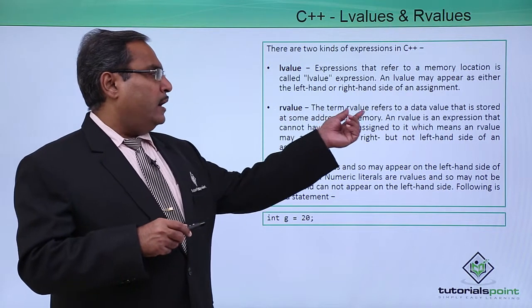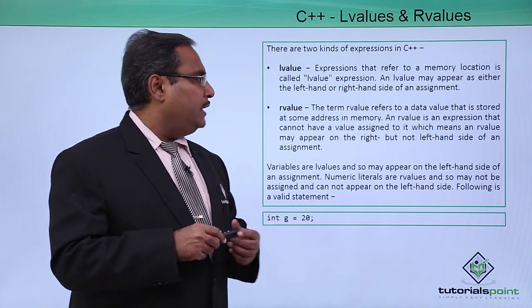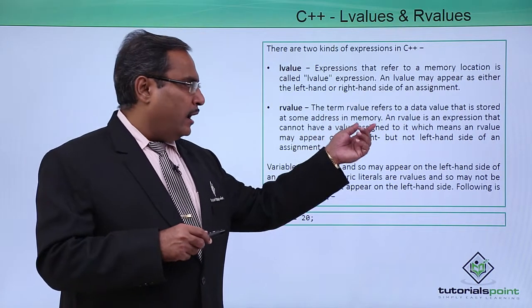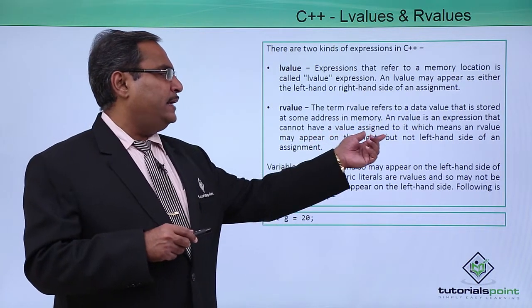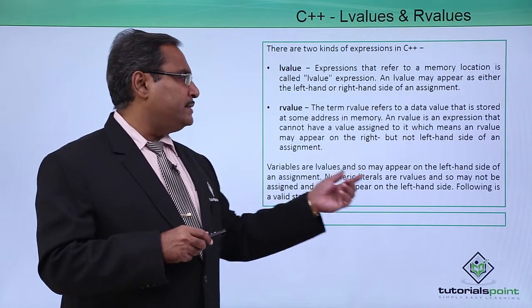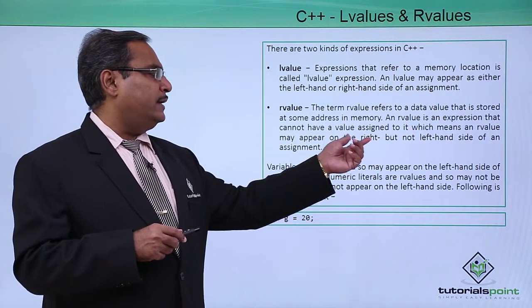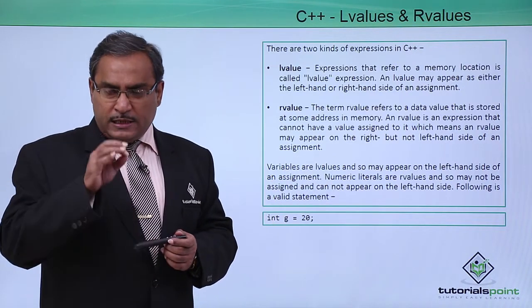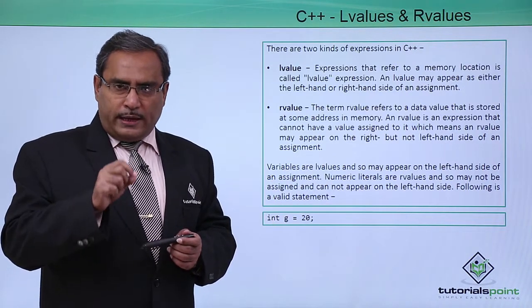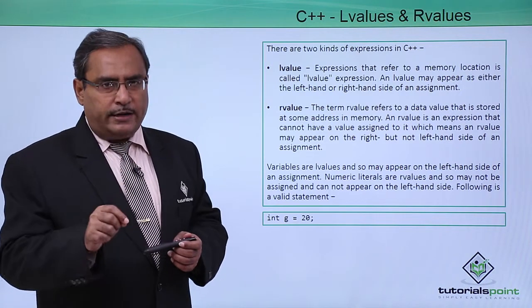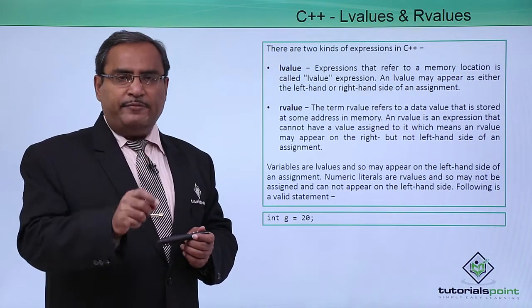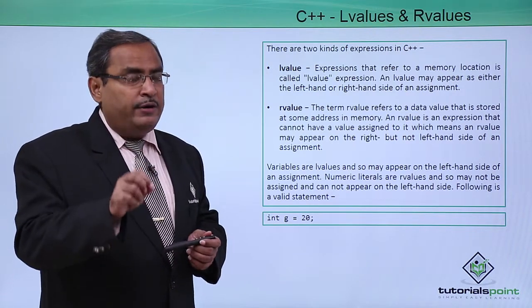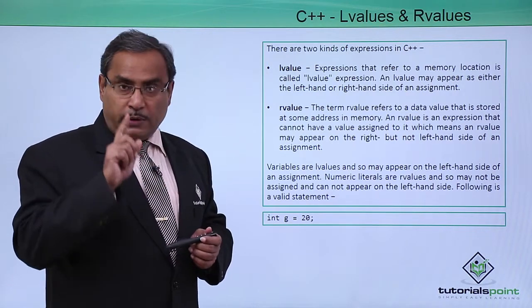R value — the term R value refers to a data value that is stored at some address in memory. An R value is an expression that cannot have a value assigned to it, which means an R value may appear on the right hand side but not the left hand side of one assignment. That means from the L value we can read data, we can write data on that, but from the R value only you can read data. What has been stored on the R value, I can read it, I can read the value, but I cannot write it.